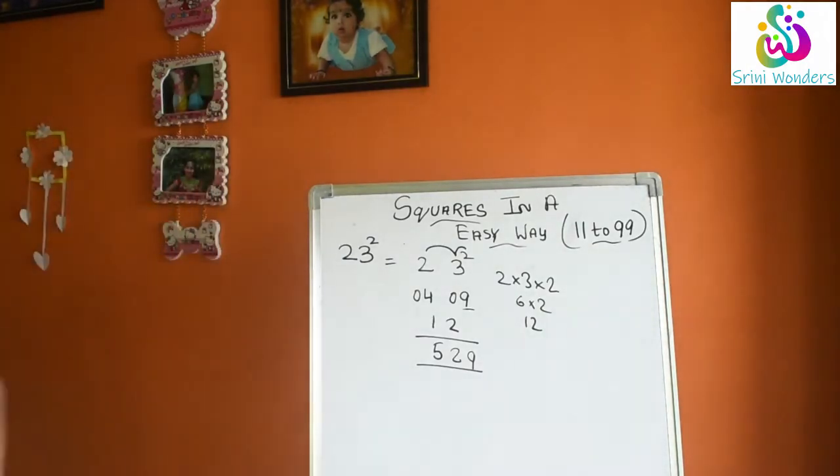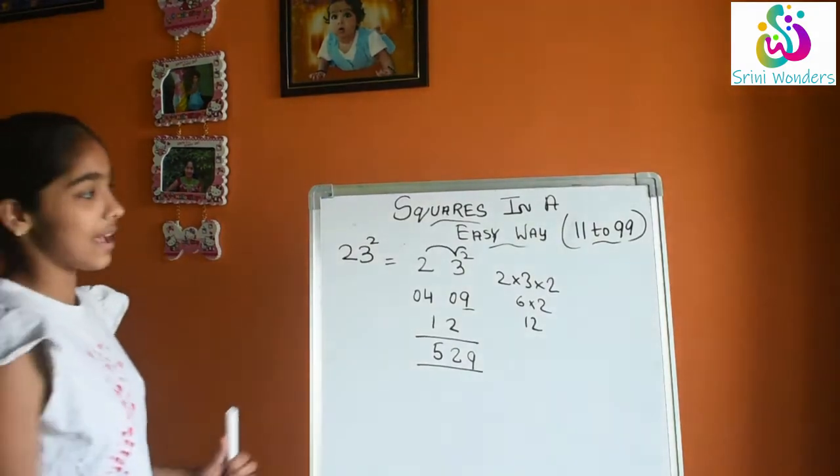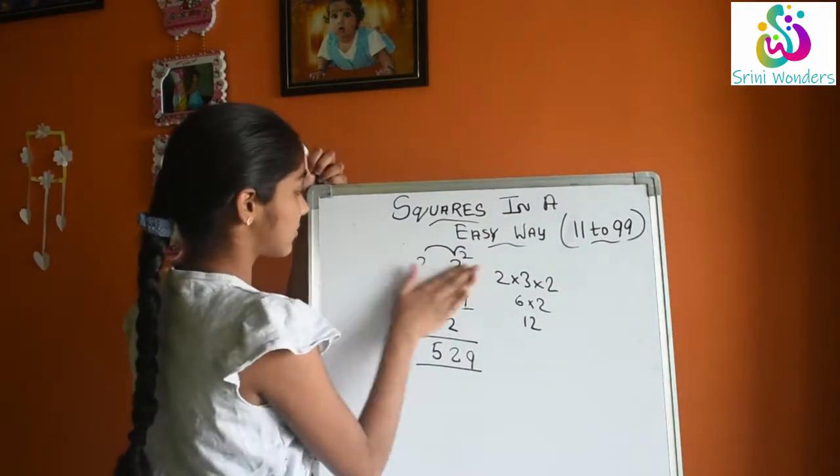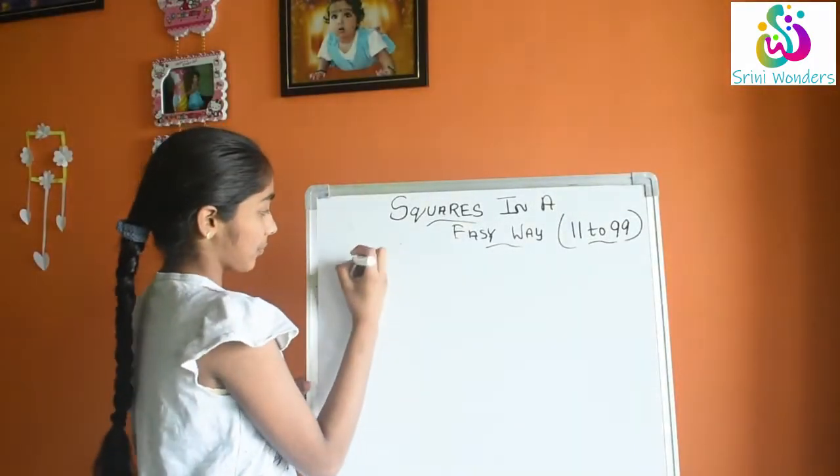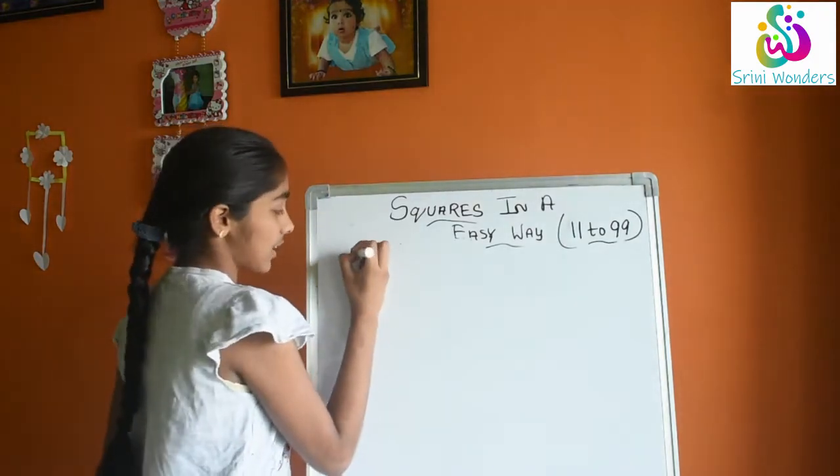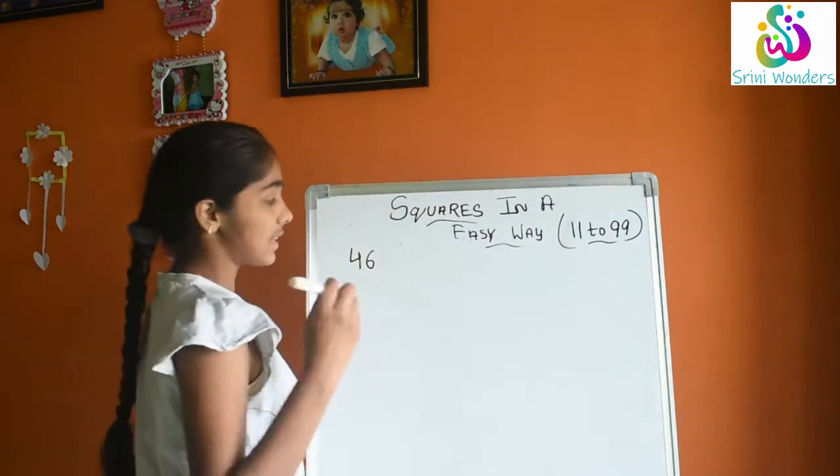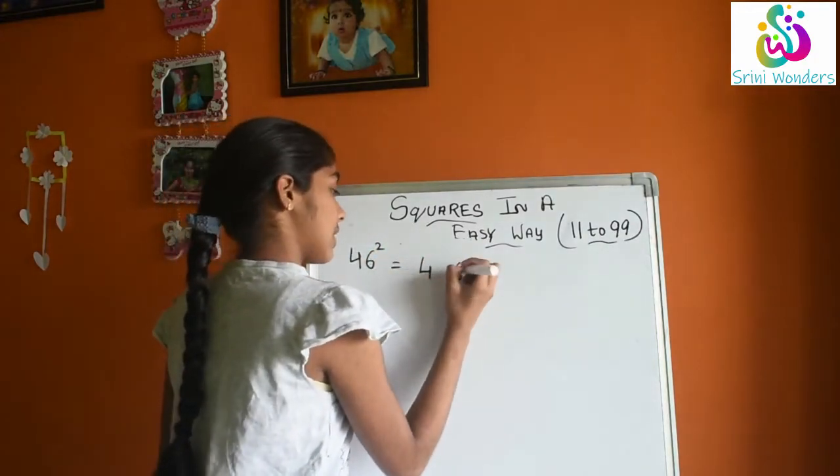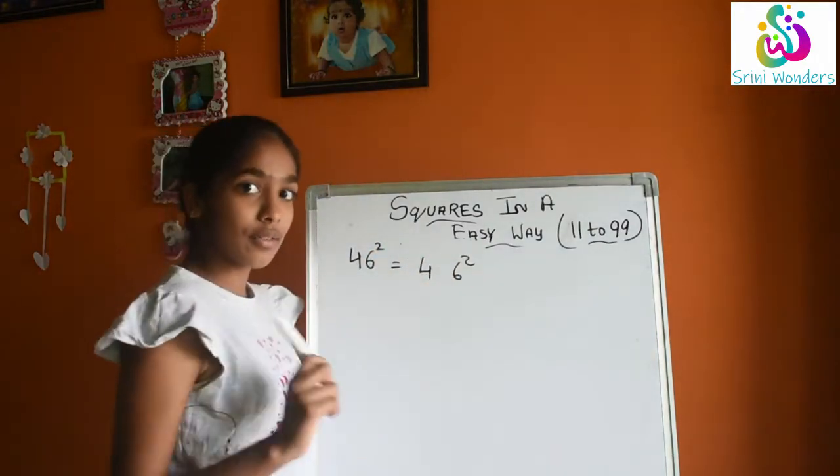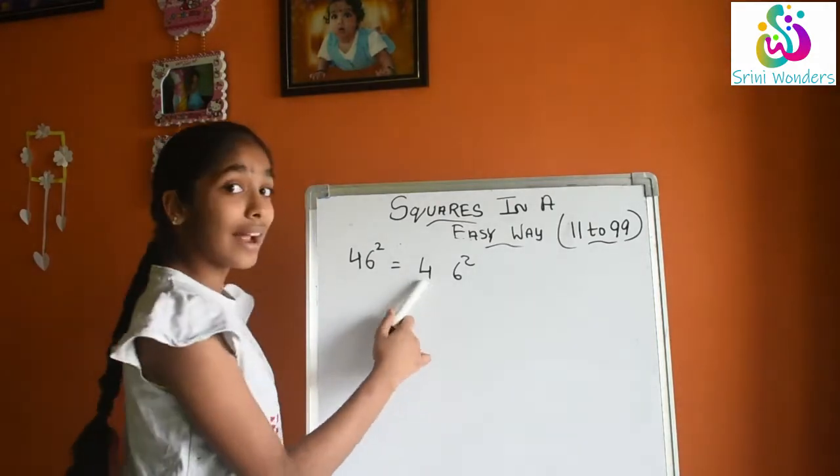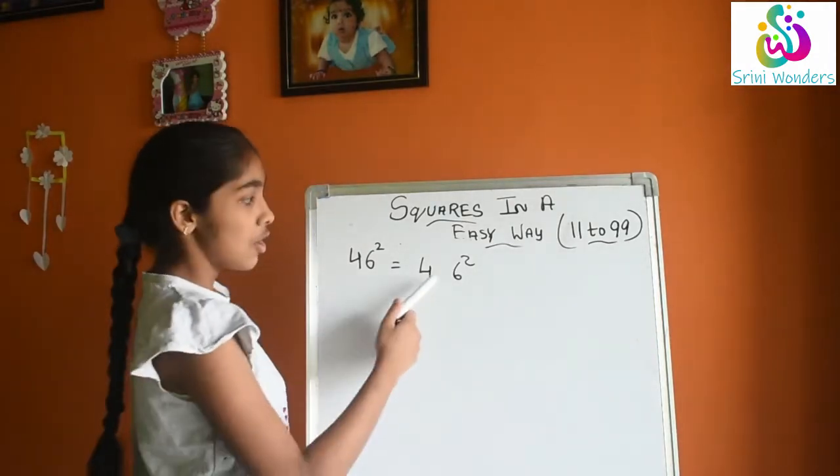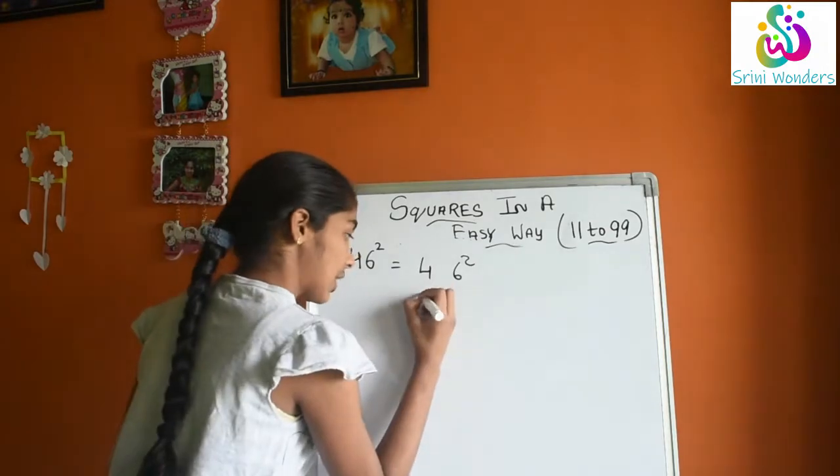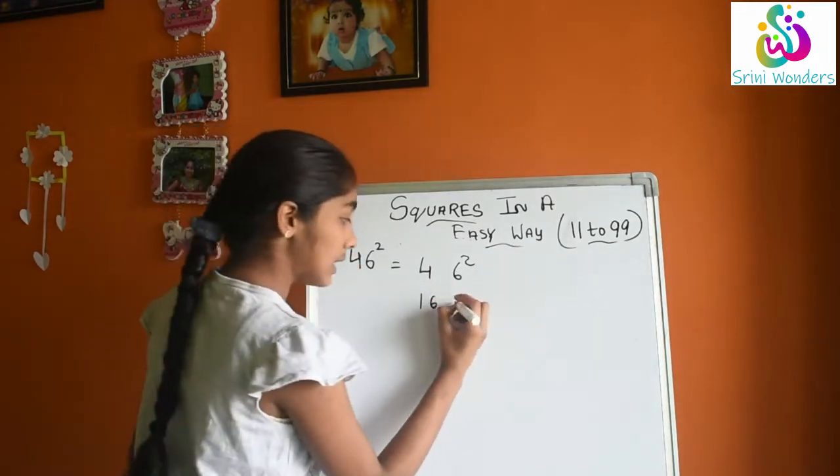So now I will tell one more example. Let us take 46 square. What we will do? What is our first step? We will write the squares of both the numbers. What is 4 square? 16. 6 square 36.